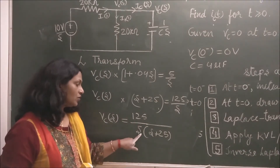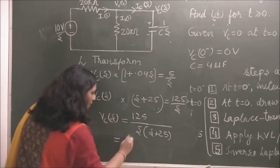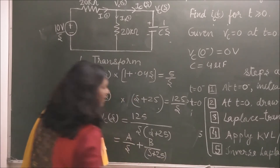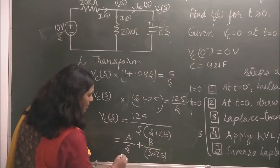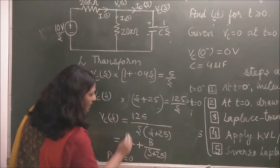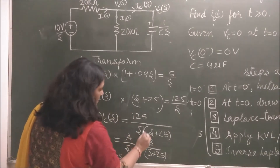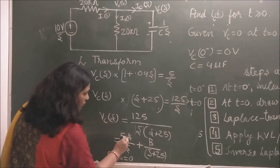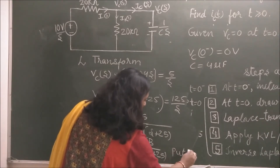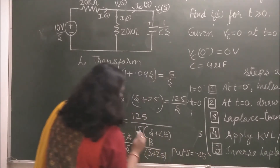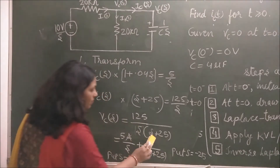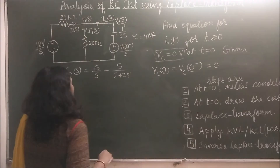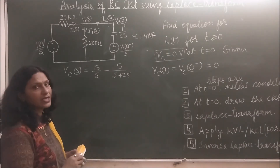Now we apply partial fractions to separate the two factors. VCS equals A/S plus B/(S plus 25). To find A, put S equals 0, leaving the S term: A equals 125/25 equals 5. To find B, put S equals minus 25, leaving the (S plus 25) term: B equals 125/(minus 25) equals minus 5. So VCS equals 5/S minus 5/(S plus 25).